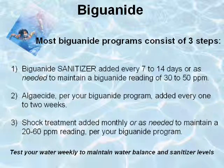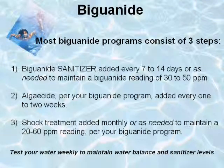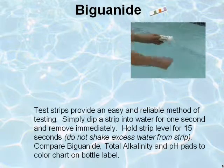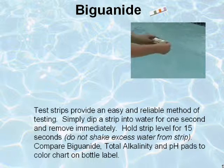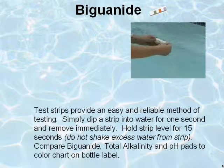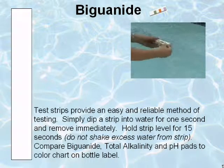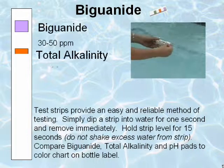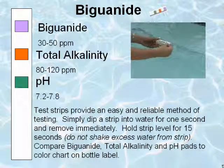Biguanide-treated pools should test the water weekly to maintain water balance and sanitizer levels. Test strips provide an easy and reliable method of testing. Simply dip a strip into the water for one second and remove immediately. Hold the strip level for 15 seconds. Compare biguanide, total alkalinity, and pH pads to the color chart on the bottle label.